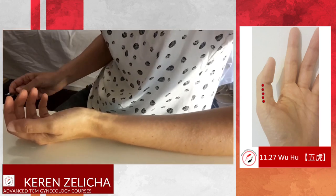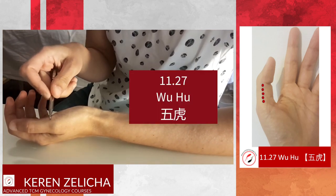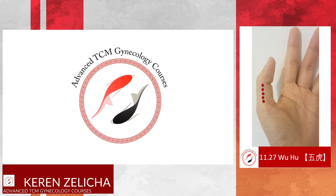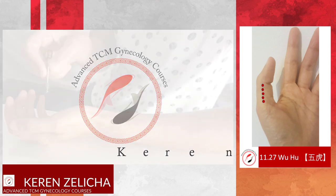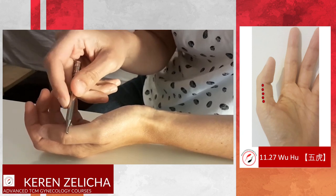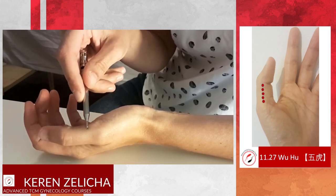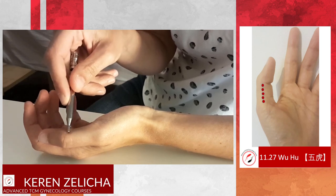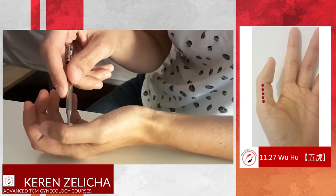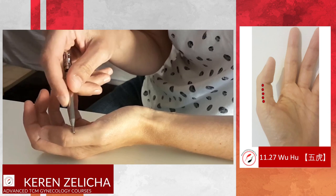Today I would like to talk about 1127 Five Tigers (Wuhu). These points are located on the radial aspect of the proximal phalange of the thumb, at the border between the red and the white skin.